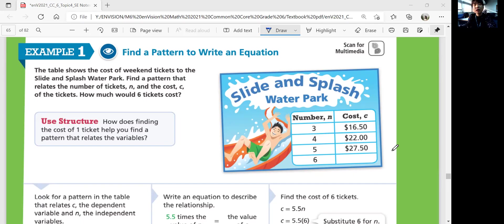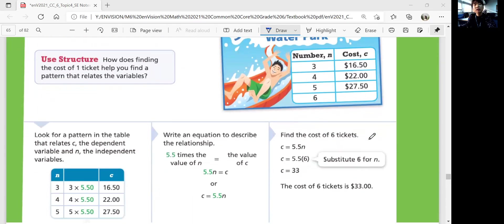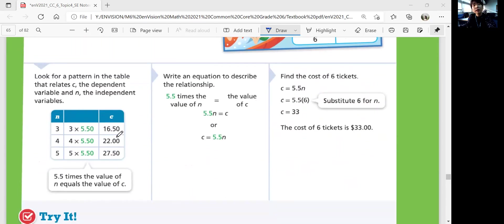How does finding the cost of one ticket help you to find a pattern that relates the variables? We have 3 tickets that cost $16.50, 4 tickets that cost $22, 5 tickets that cost $27.50. First we're going to look for the pattern of the table that relates C, the dependent variable, and the N, the independent variable. The number of tickets will be the independent variable because it causes the cost, right? So 3 times 5.5 is 16.5. 4 times 5.5 is 22. 5 times 5.5 is 27.5. So you can say that each ticket will cost $5.50.